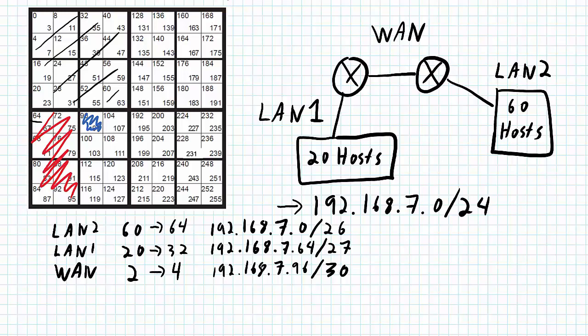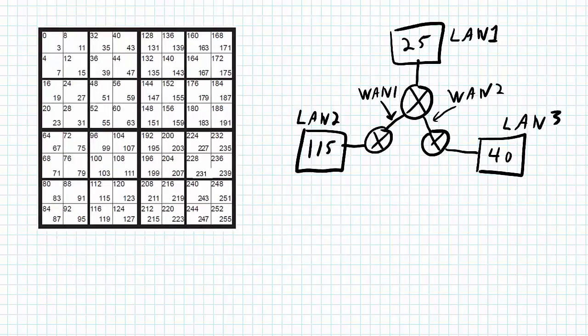I now have all of these remaining blocks available to potentially assign to other networks in case I need to expand my network in the future. Here's another example with three LANs and two WANs — you can see the different sizes, and each WAN only needs two addresses because these are point-to-point connections between the networks.